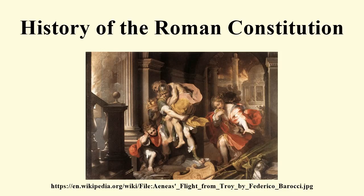As Rome grew, it needed more soldiers to continue its conquests. When the plebeians were released from their dependency, they were released from their curia. When this occurred, while they were no longer required to serve in the army, they also lost their political and economic standing. To bring these new plebeians back into the army, the patricians were forced to make concessions. While it is not known exactly what concessions were made, the fact that they were not granted any political power set the stage for what history knows as the conflict of the orders.